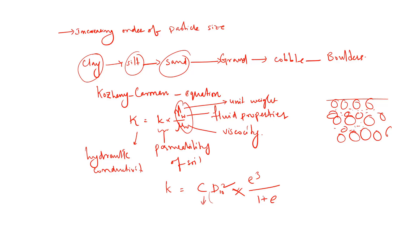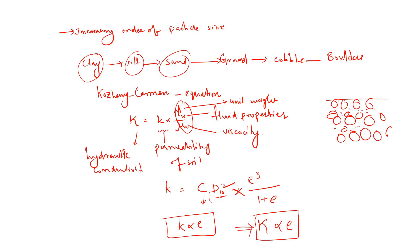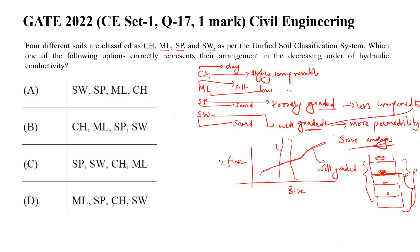Here, C is the shape constant and e is the void ratio. So hydraulic conductivity k is proportional to the void ratio. Void ratio is generally more when the particle size is larger. Therefore, e is proportional to the particle size — when size is more, e is more, and when e is more, hydraulic conductivity is more.